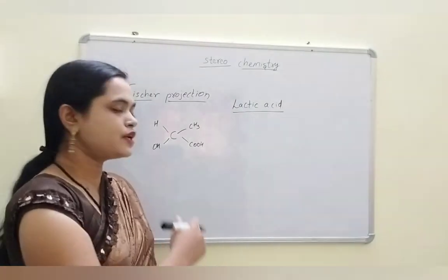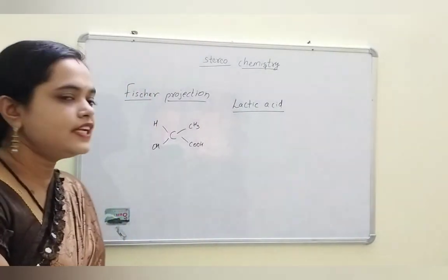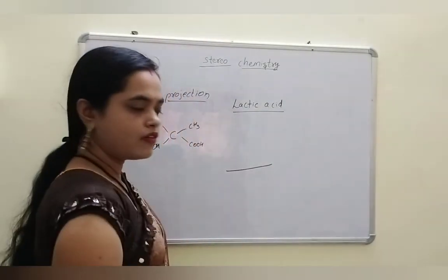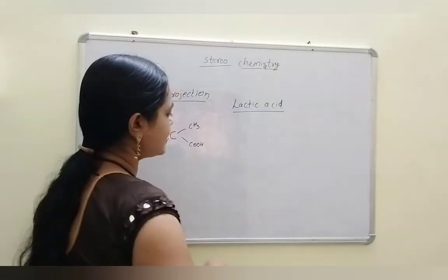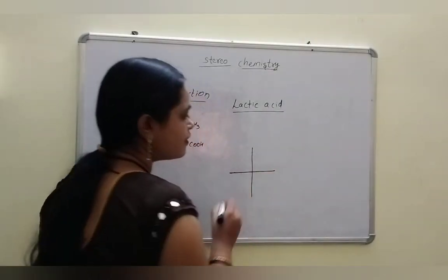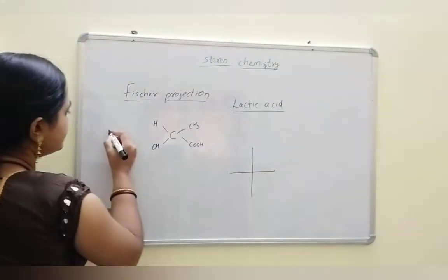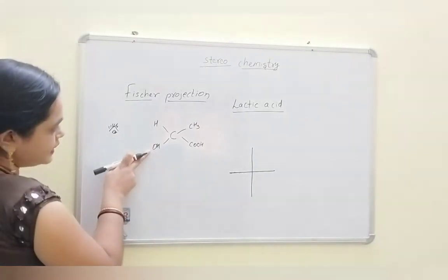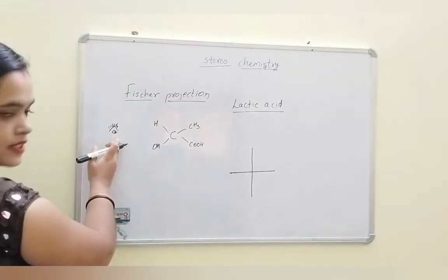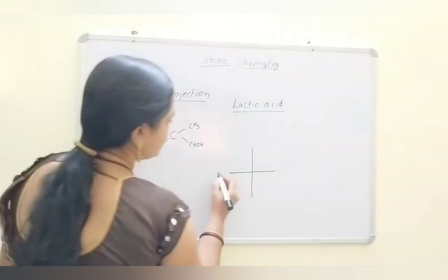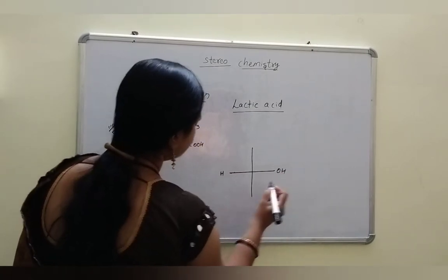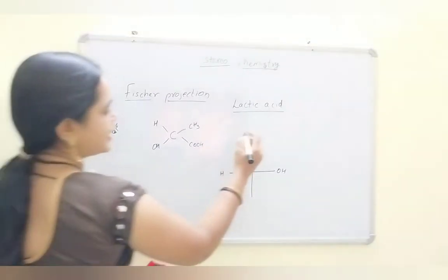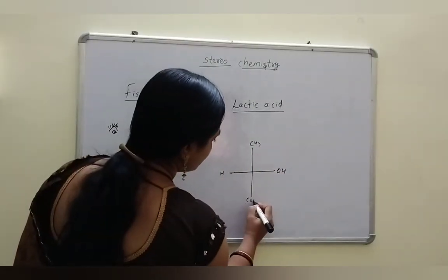How do we draw the Fischer projection for lactic acid? In Fischer projection, first we have to draw two lines — one horizontal line and one vertical line. If the bonds that are nearer to, or towards, the observer are present on the horizontal line — here H and OH are present. The bonds that are far from the observer are present on vertical lines — that means CH3 and COOH.